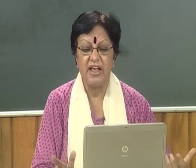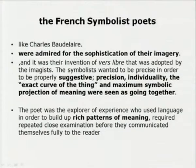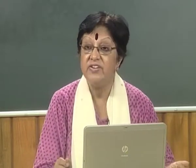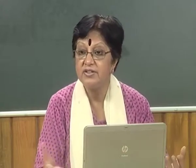The French Symbolist poets like Charles Baudelaire had a great influence upon the modernists, especially the modern poets. They were admired for the sophistication of their imagery — not only for what they said on the surface but because of the implied symbolism of every object portrayed, going back to mythic, social, anthropological, and literary associations. The Symbolists also invented free verse, which the Imagists adopted. They wanted to be precise in order to be properly suggestive — precision, individuality, the exact curve of the thing, and maximum symbolic projection of meaning were seen as going together.